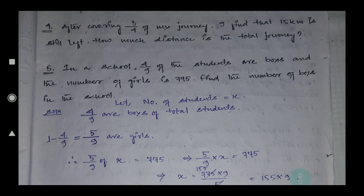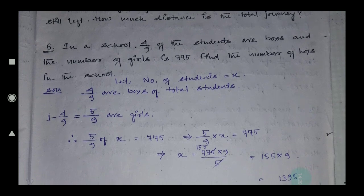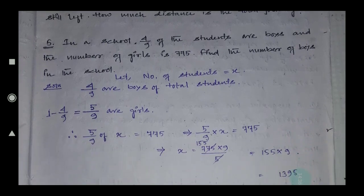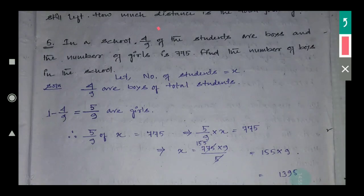Question 5: in a school, four-ninths of the students are boys and the number of girls is 775. Find the number of boys. The total number of students is not given, so let it be x. Four-ninths are boys, meaning 4/9 of x equals the number of boys.